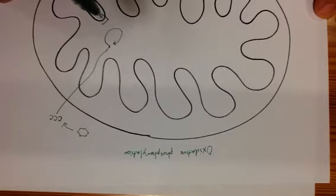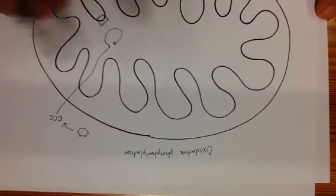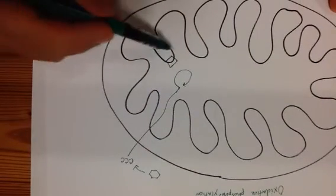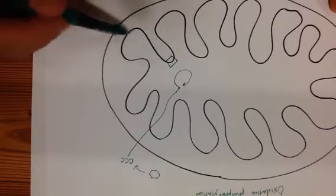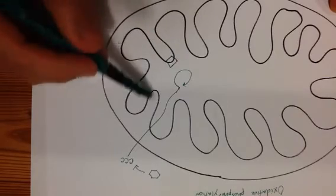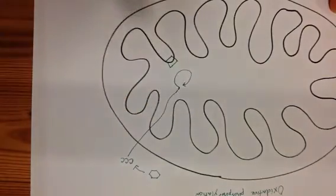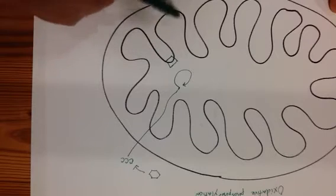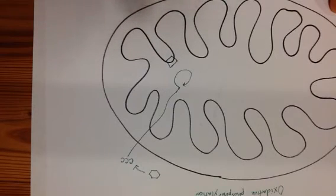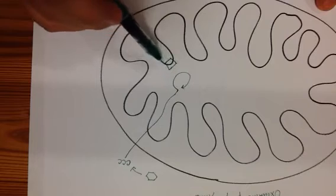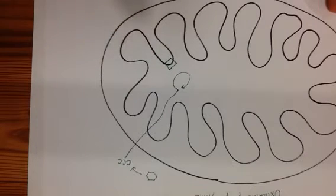So what we're going to do is pretty much zoom in on this inner membrane here. This inner membrane is highly convoluted and folded, and what that does is it creates a lot of surface area for this oxidative phosphorylation process. So we're going to zoom in here. I'm going to show you what that looks like zoomed in.